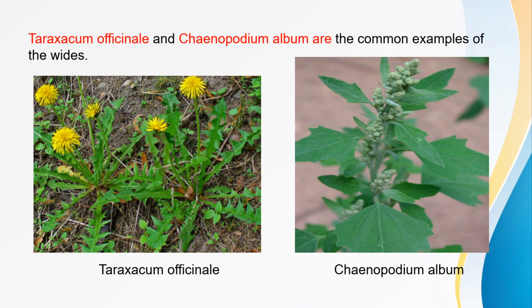Examples of cosmopolitan or widely distributed plants include Taraxacum and Chenopodium album. These plants are distributed throughout the earth across all the continents.